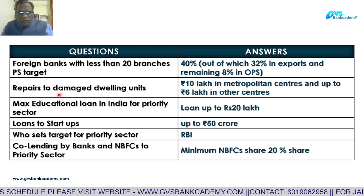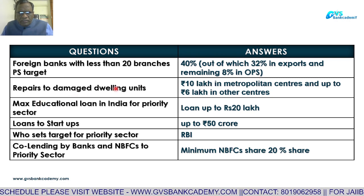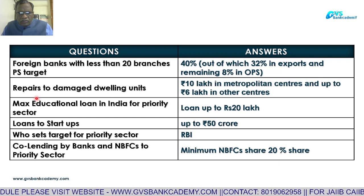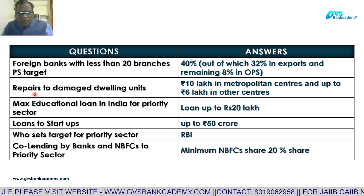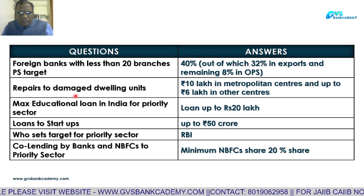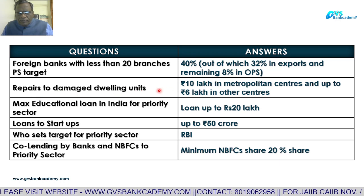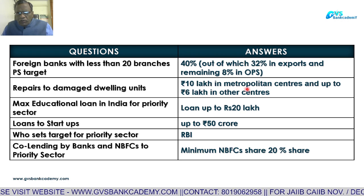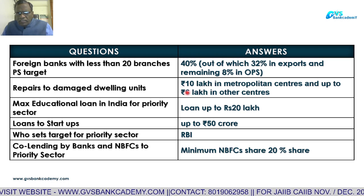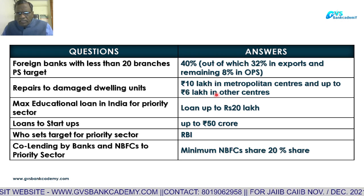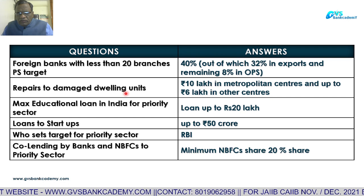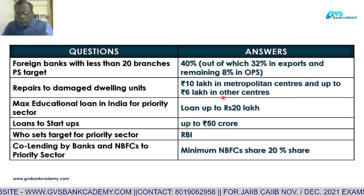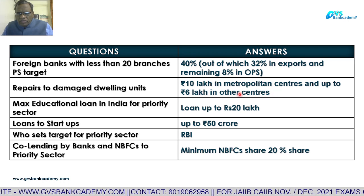For repairs to damaged dwelling or housing units, under priority sector, the limits are: 10 lakhs in metropolitan areas and 6 lakhs in other centres. For housing loan repairs — 10 lakhs in metro, 6 lakhs in other areas.